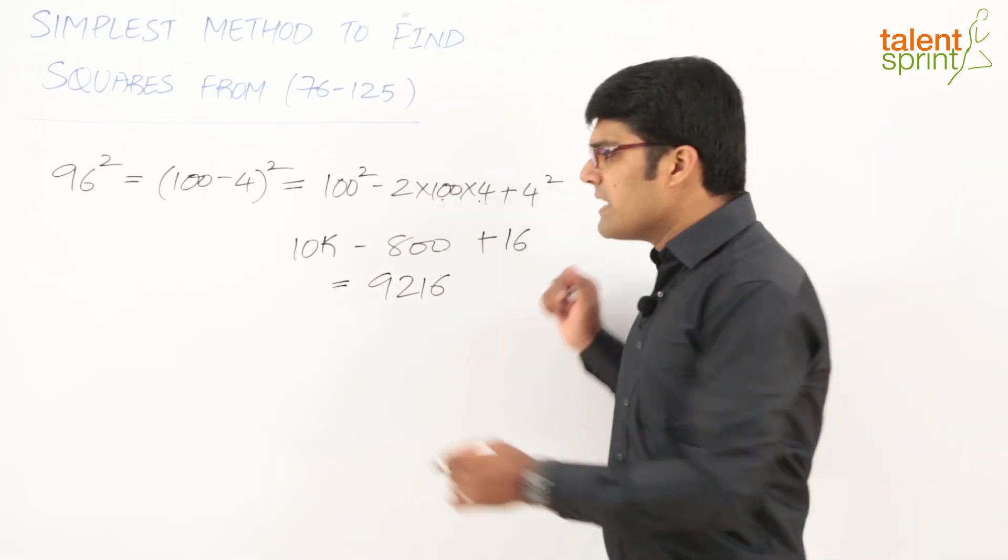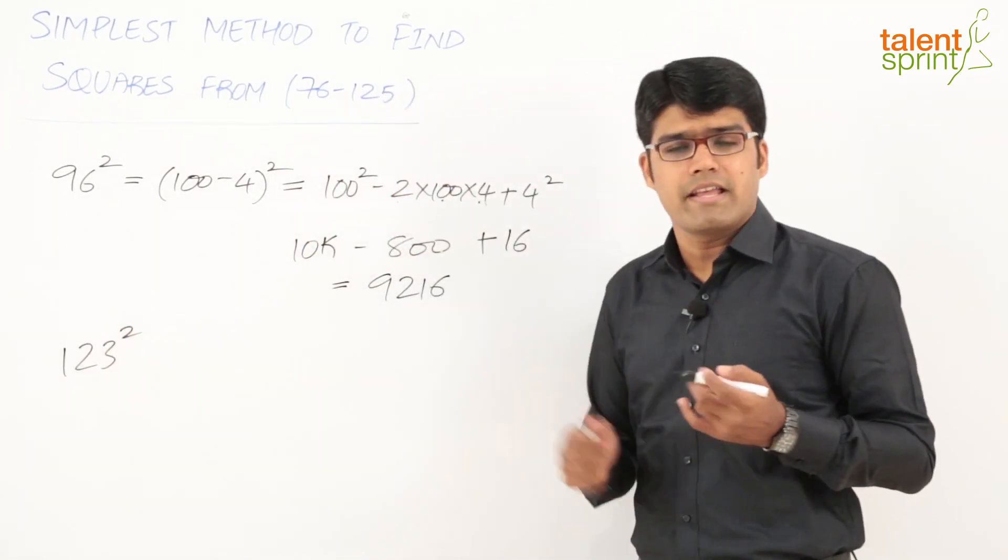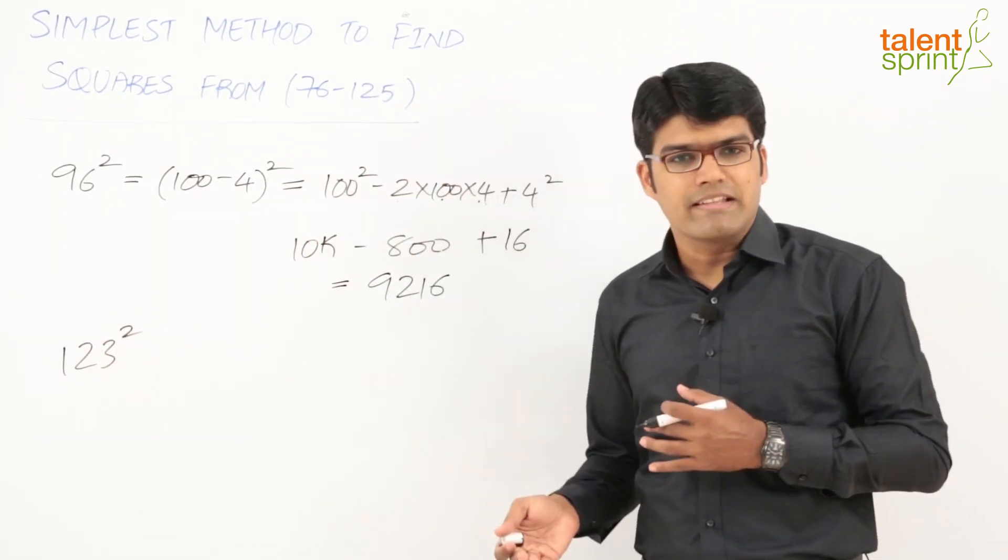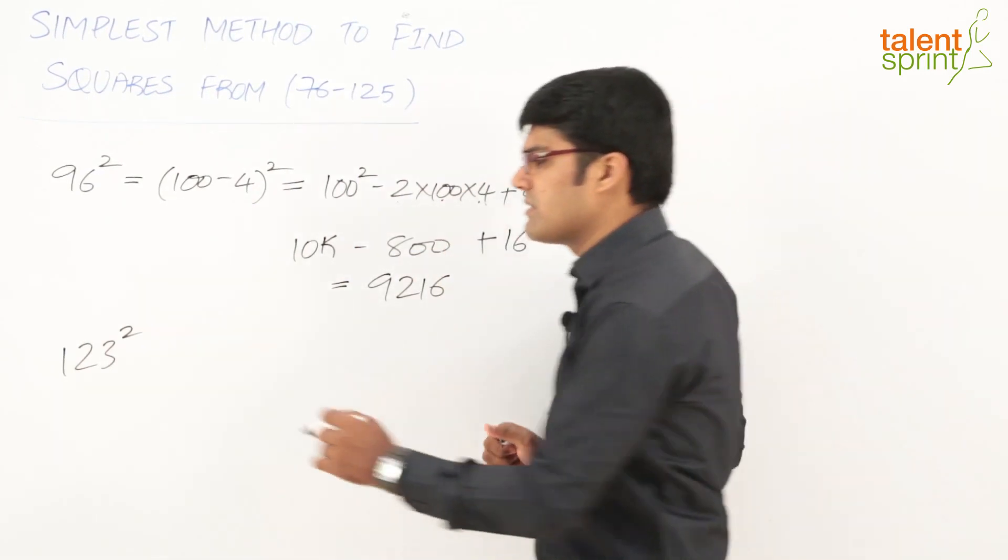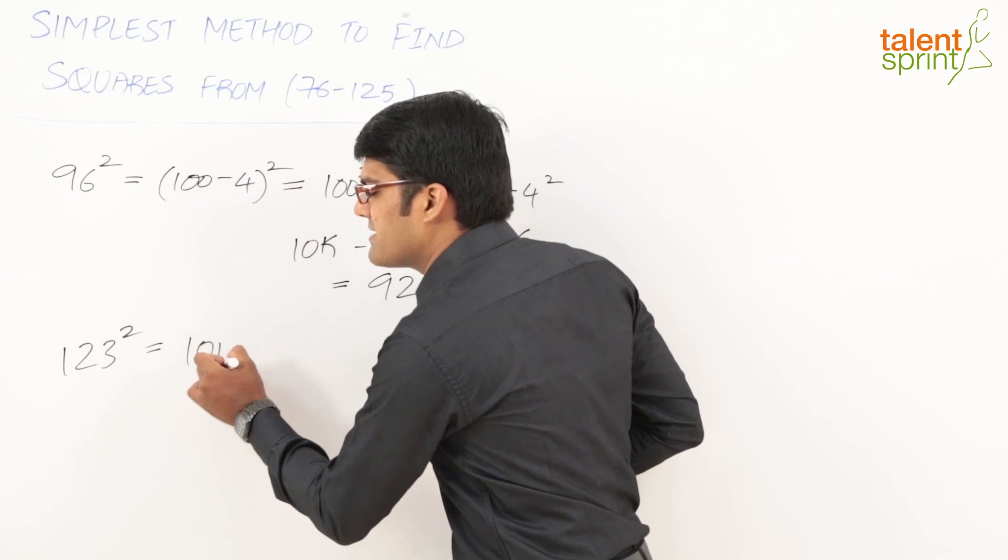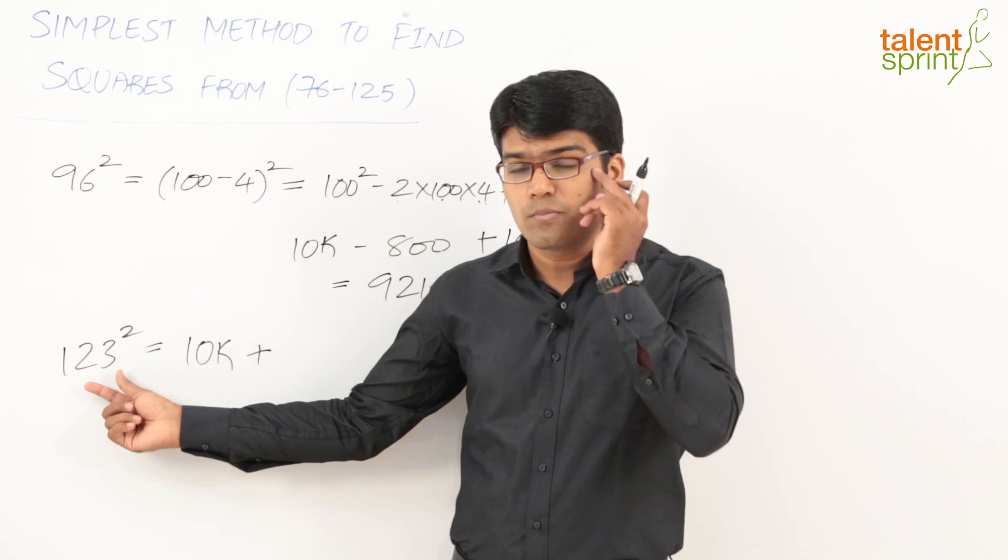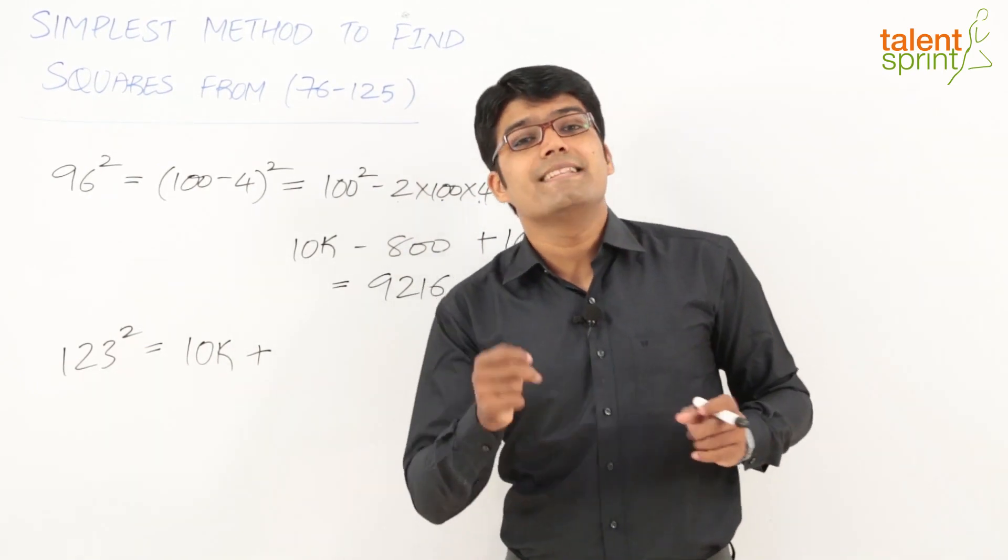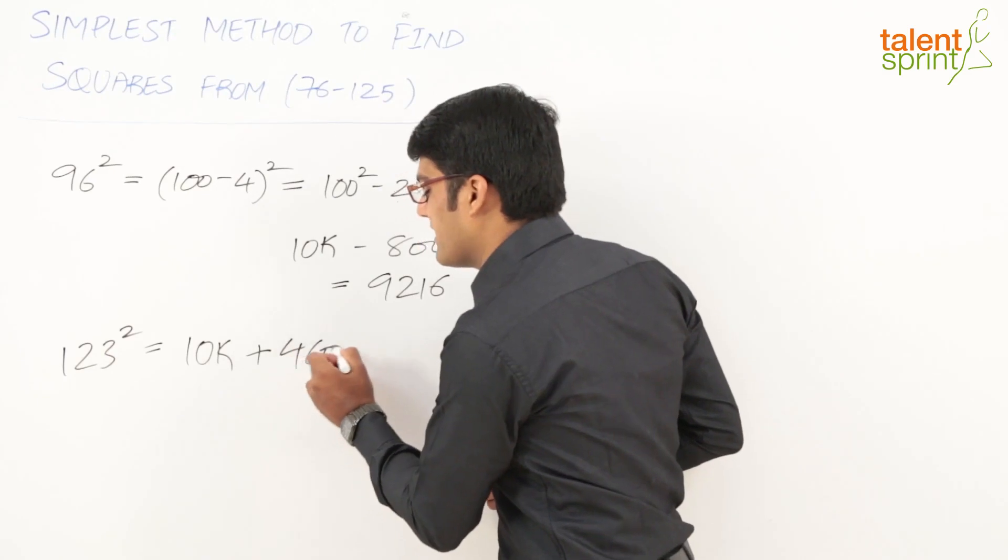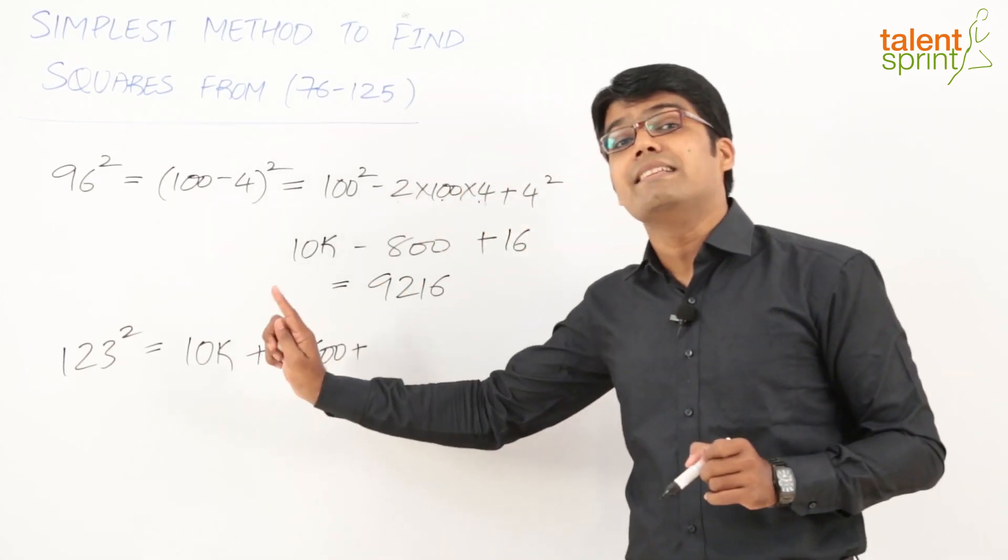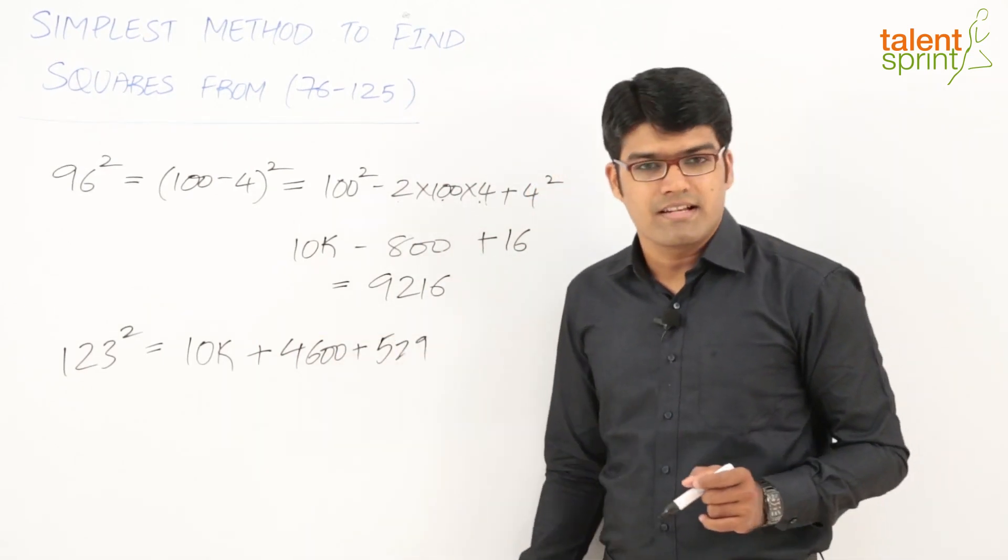Let's look at a few more examples. Let's say we have to find out 123². Now what do we do? 123 can be taken as 100 + 23. Now that we've already looked at the expansion, let us directly do the calculation. The first term is 10,000. What about the second term? +23 is our b here. Double it: 23 doubles to 46, 46×100 = 4,600. The last term is 23² = 529. So 10,000 + 4,600 = 14,600 + 529 = 15,129.